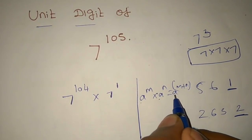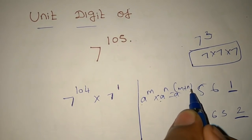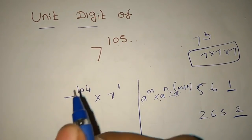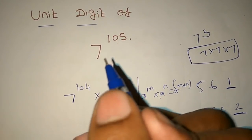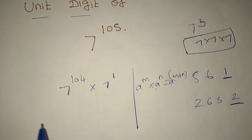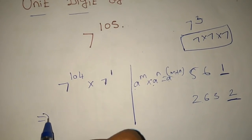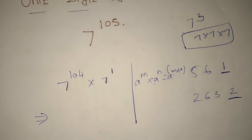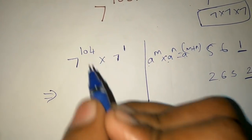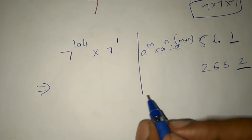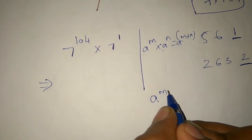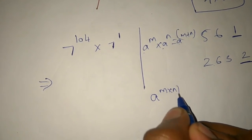We will write a power m plus n. So, 1 out of 4 plus 1. We will write a simple formula. 7 power 1 out of 4. This formula is a power m into n.